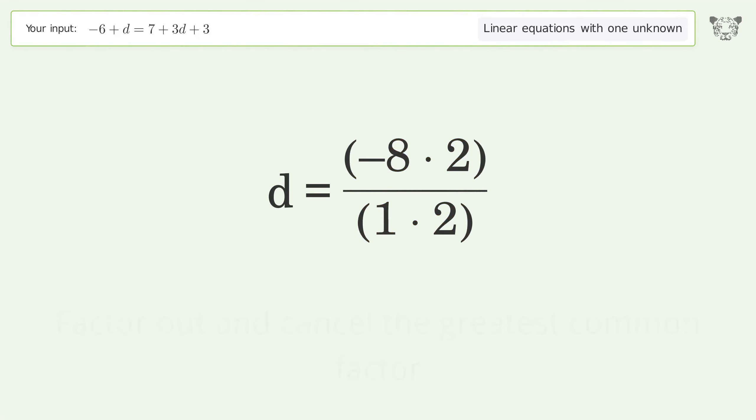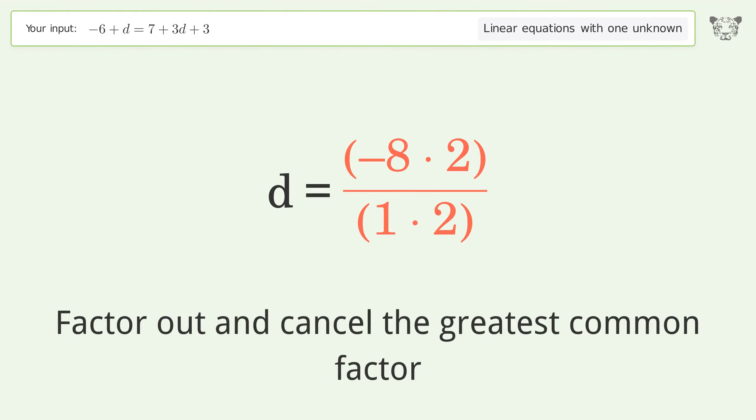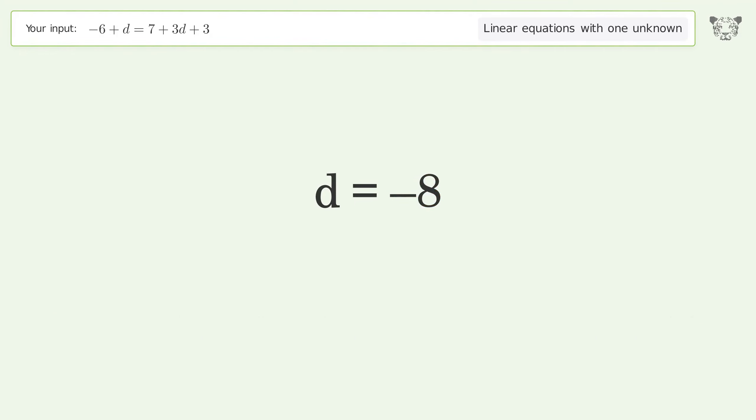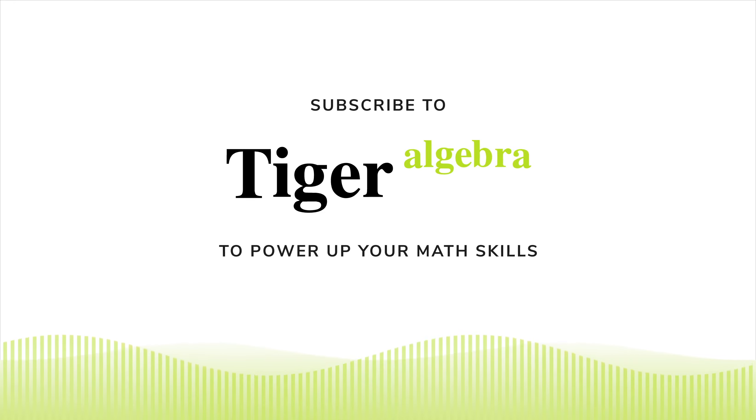Find the greatest common factor of the numerator and denominator. Factor out and cancel the greatest common factor. And so the final result is d equals negative 8.